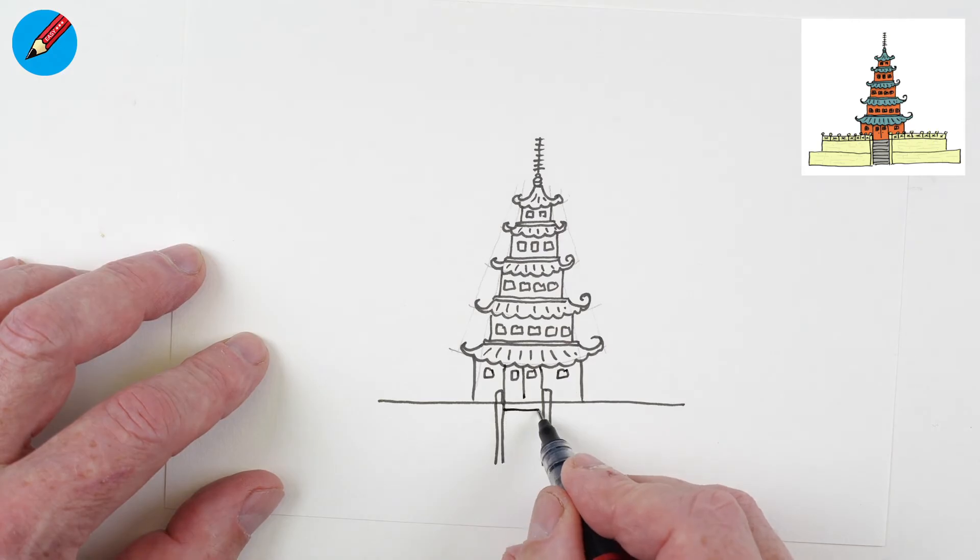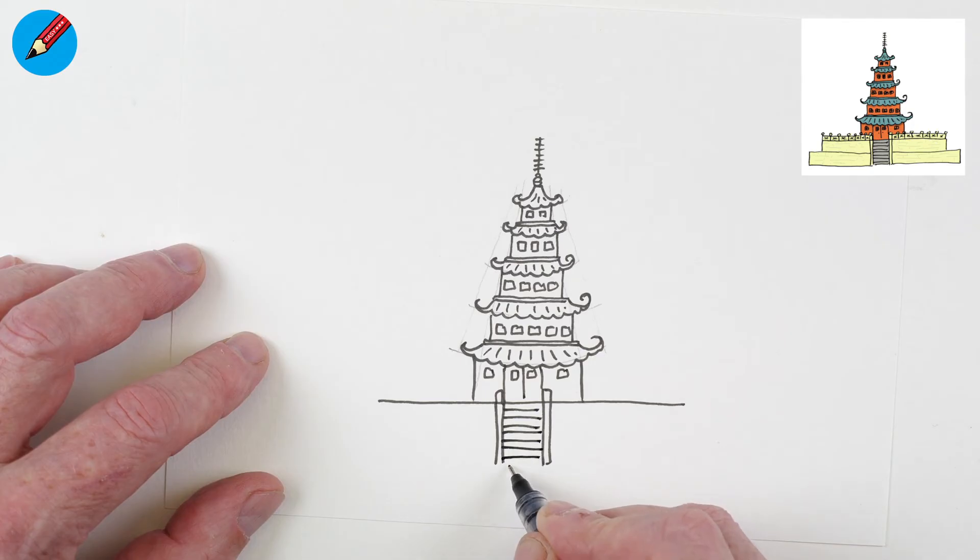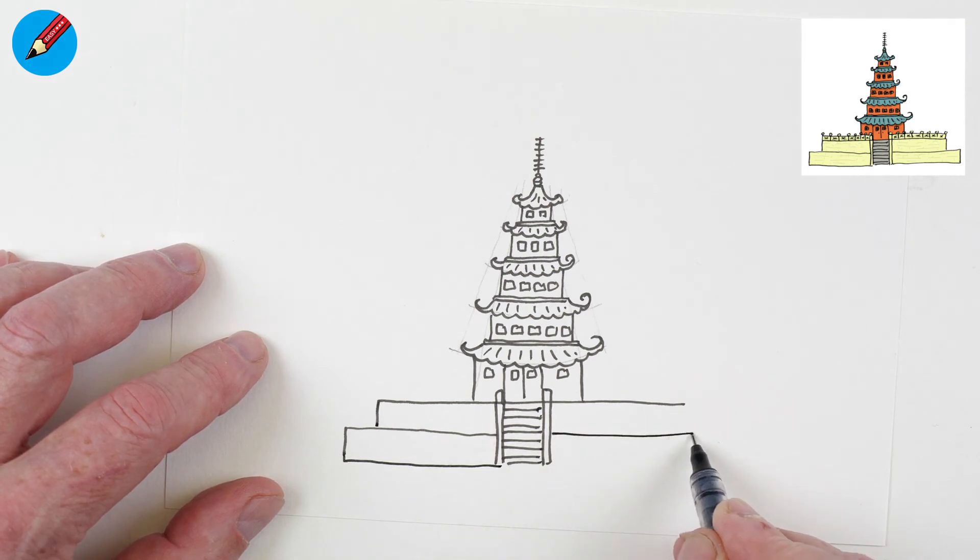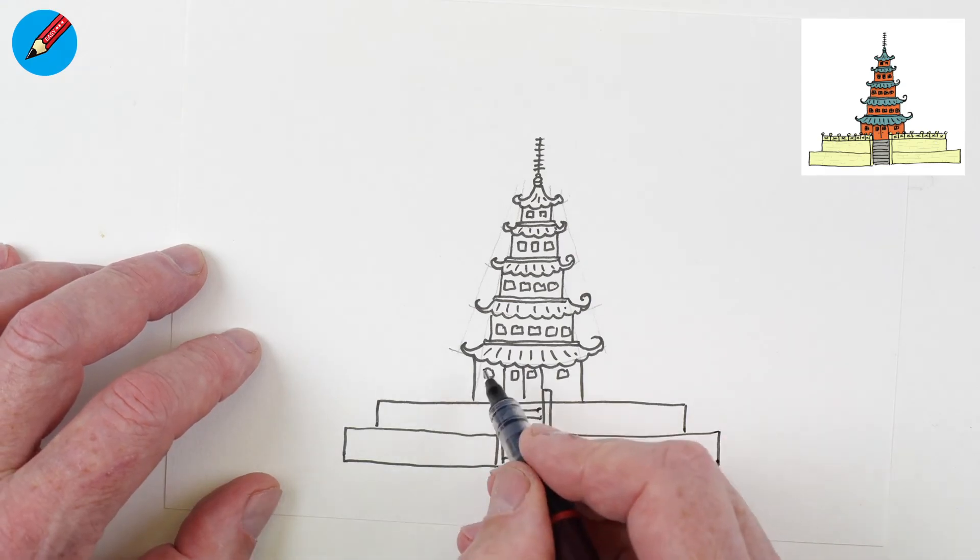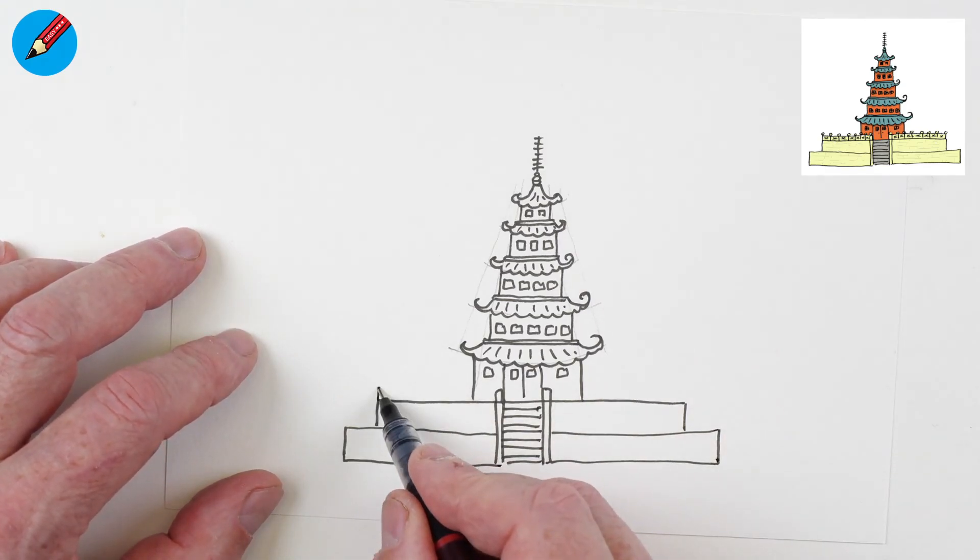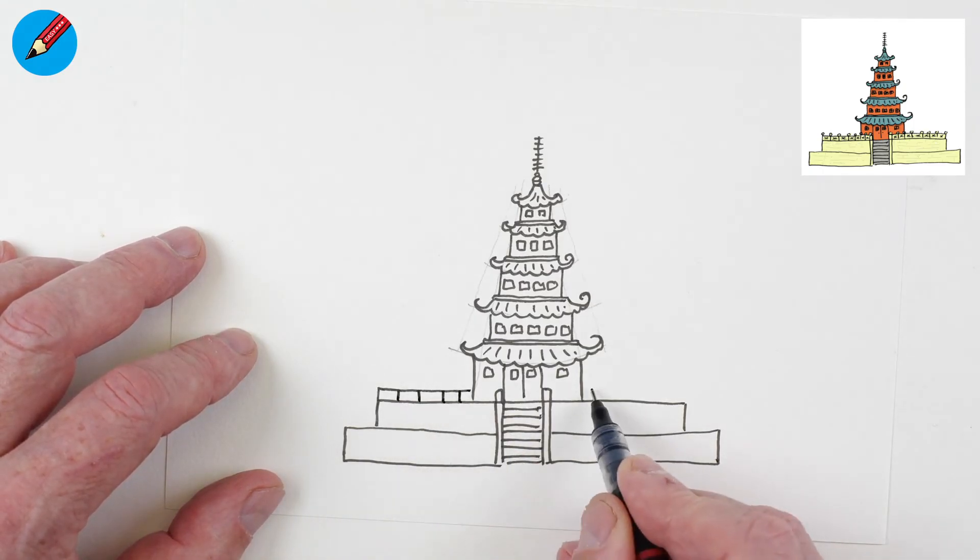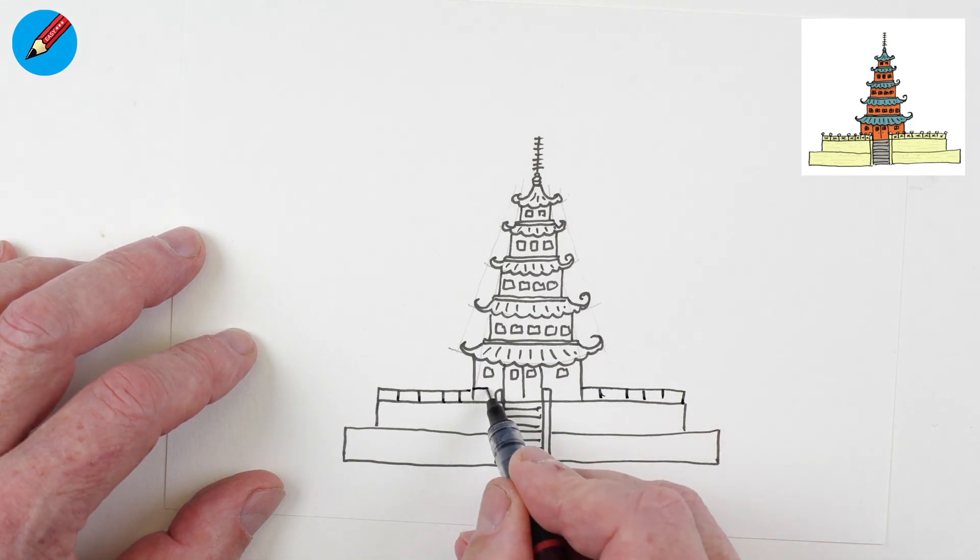These are going to be the steps going up to the front door, and we can come out here and down and across. That'll go down there, that will go down there, so the base is getting wider. And then we're going to want to have a kind of balustrade across here, one, two, three, four like that. And I'm going to take that in to the top of the steps as well.